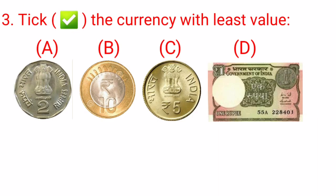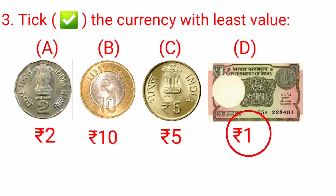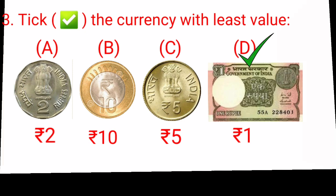Take the currency with the least value. Here we can see we are given some coins and a note. At option A we have a coin of 2 rupees. At option B there is a 10 rupee coin. At option C we have a 5 rupee coin. And at option D we have a 1 rupee note. Kids, the smallest among 2, 10, 5, and 1 is 1. So the currency with the smallest or least value is 1 rupee, and we will put a tick mark at option D.